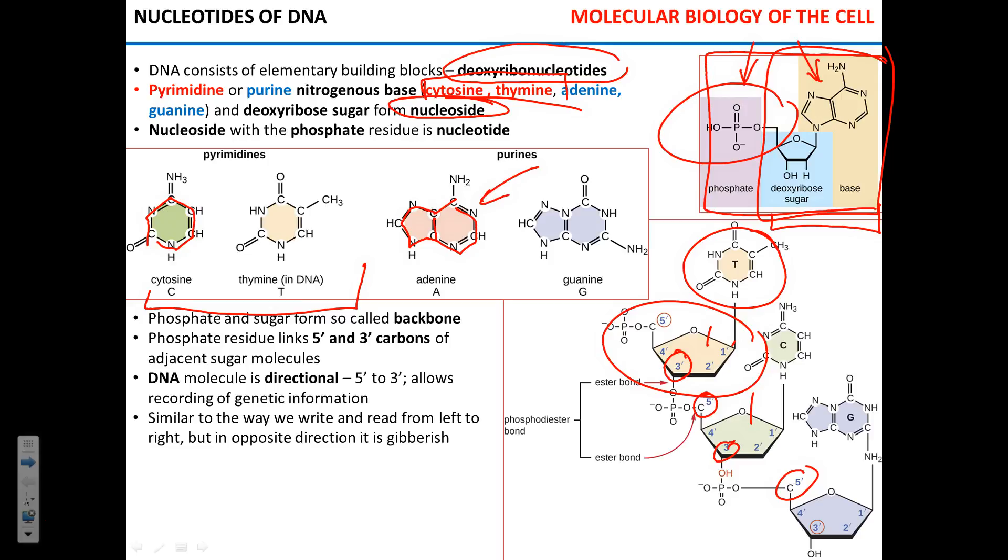So when people form conga line, they stand in a certain way, right? So like, I am facing somebody's back. The person behind me faces my back. People don't stand like butt to butt. It's very inconvenient to dance in this position. Somebody has to go backwards, right? So we have a certain direction. We have a directionality. Same goes for DNA. We have a directionality.